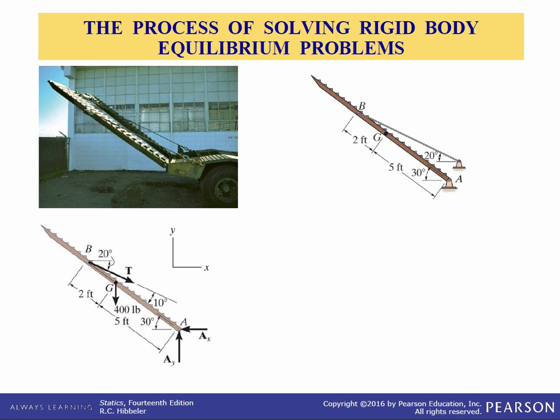Now we'll move into section 5.2 free body diagrams. Successful application of the equations of equilibrium requires the complete specification of all the known and unknown external forces that act on the body. The best way to do this is to draw a free body diagram. This diagram is a sketch of the outline shape of the body which is represented as being isolated or free hence free body diagram free from its surroundings. On the sketch show all forces and couple moments that the surroundings exert on the body so that these effects can be accounted for when the equations of equilibrium are applied. A thorough understanding of how to draw a free body diagram is of primary importance for solving problems in mechanics.